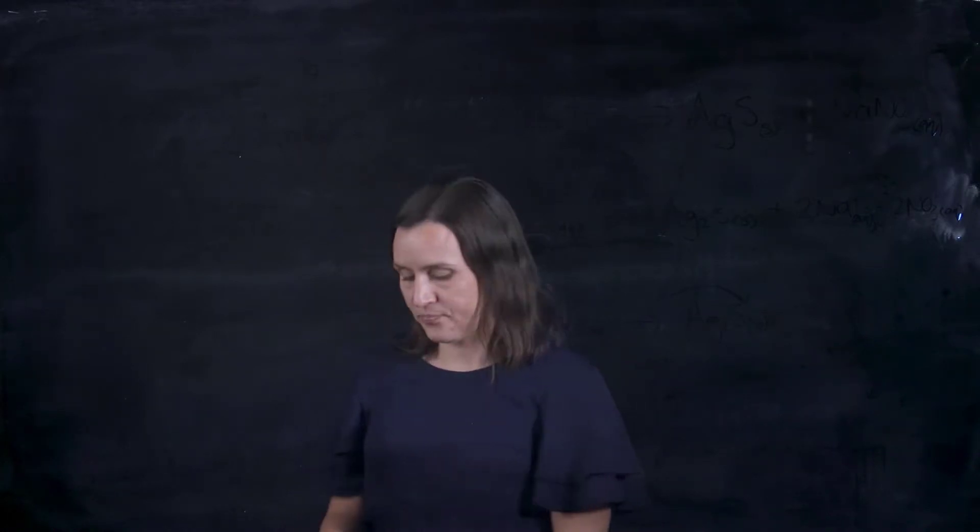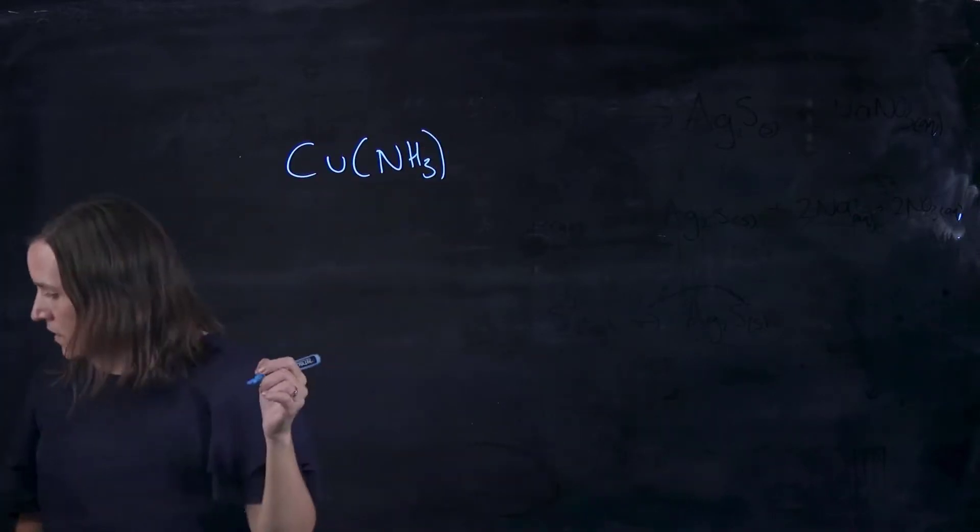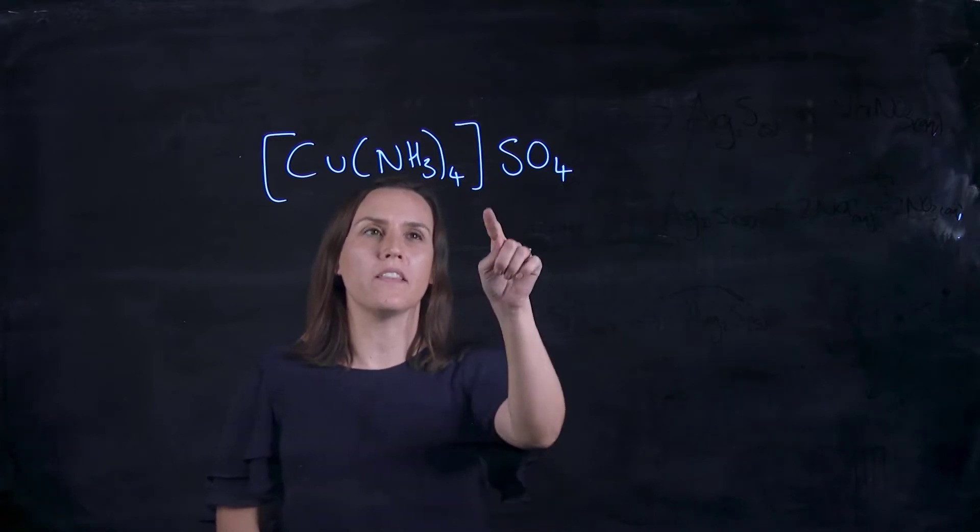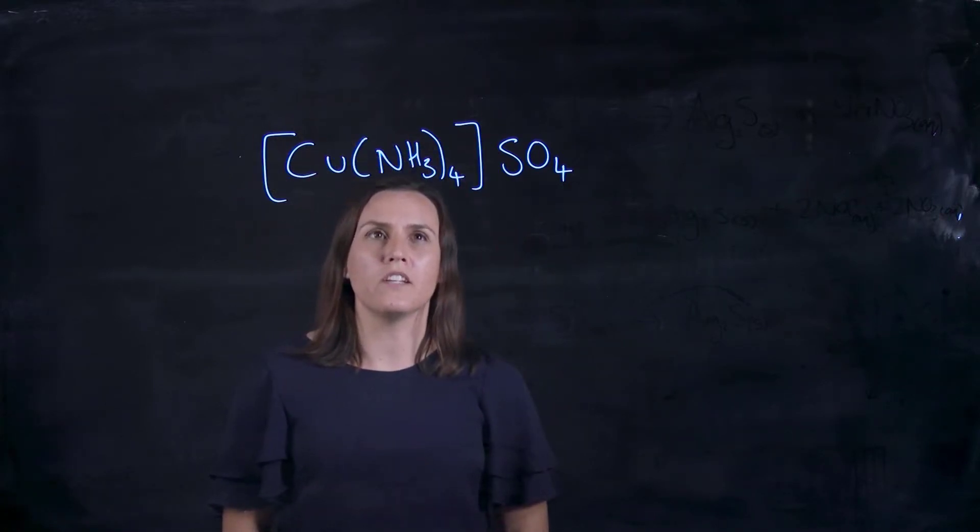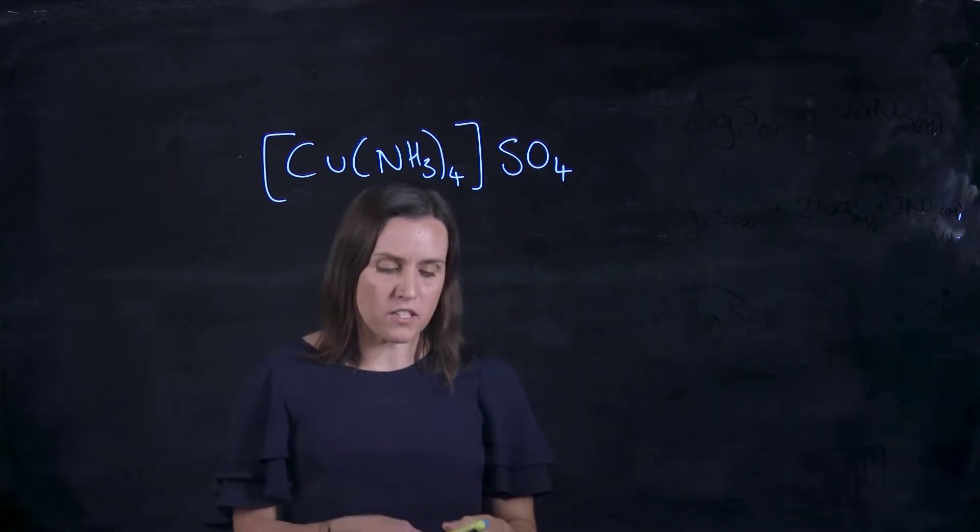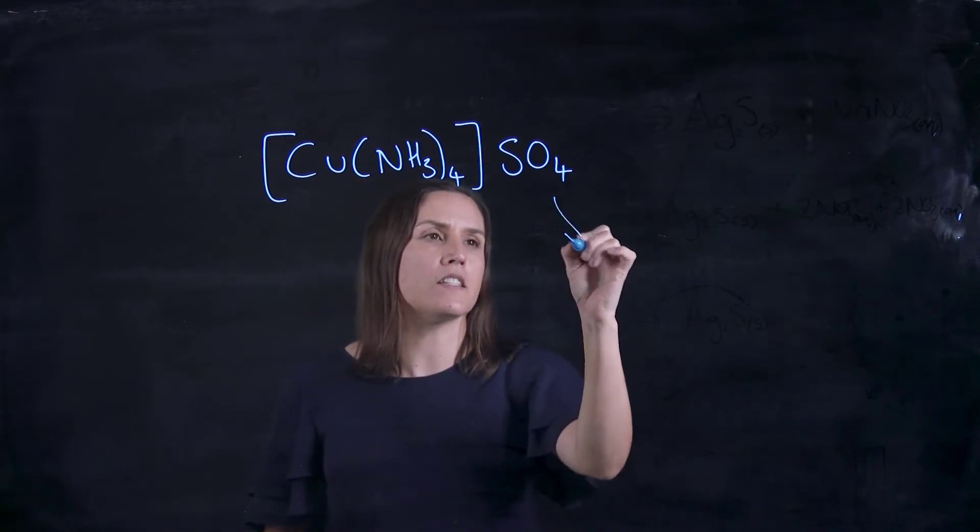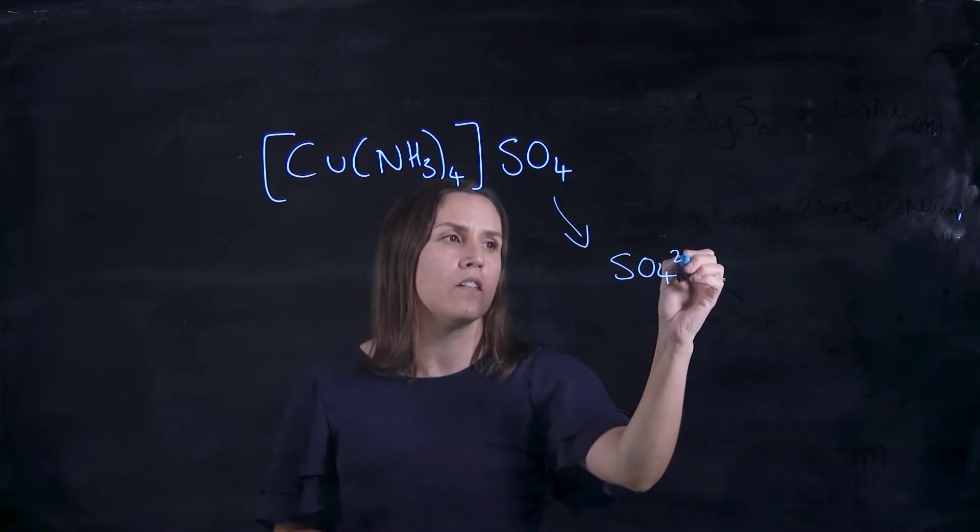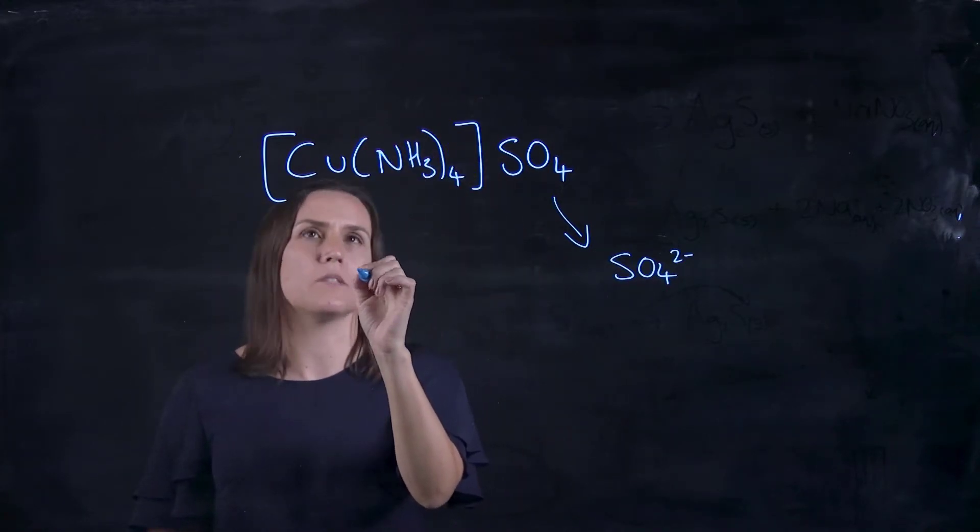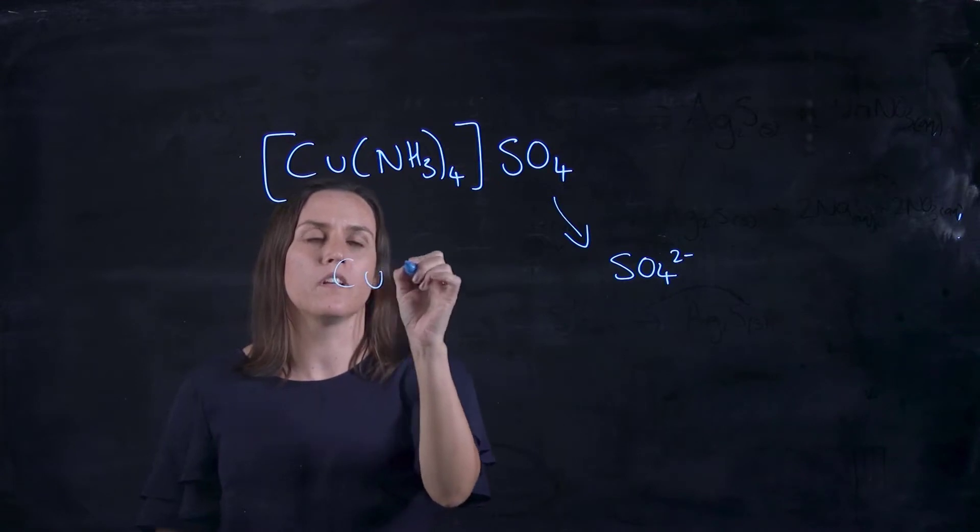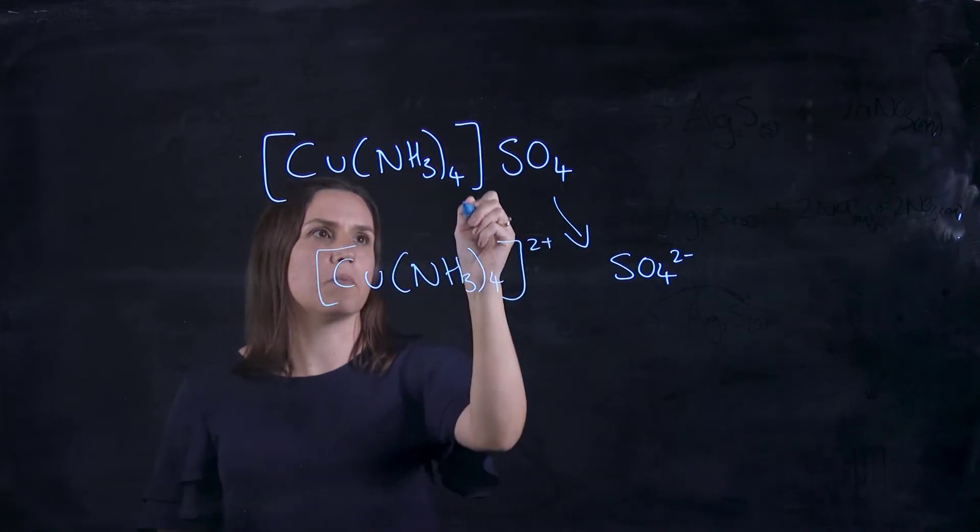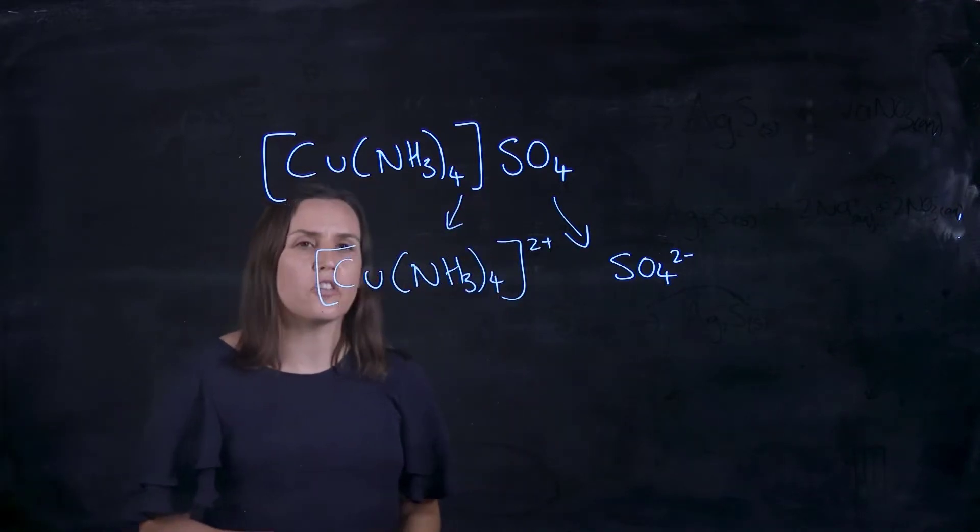So first of all, let's draw up an example. Okay, so this is our example here that we're going to work with. Now to work out the charge that's on the coordination complex, we want to take away the anion, so this polyatomic anion. So SO4 has a 2- charge. So that means that this whole complex here must have had a 2+ charge because it's neutral overall. So we can split it up to show the 2 charges on it.